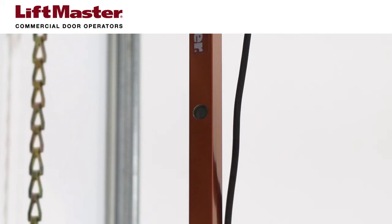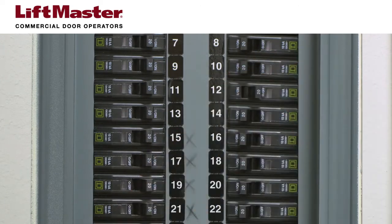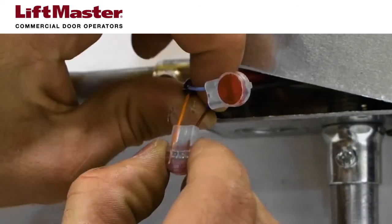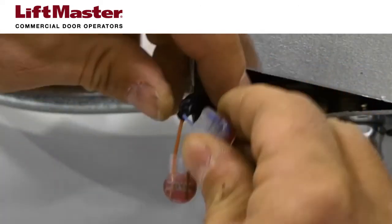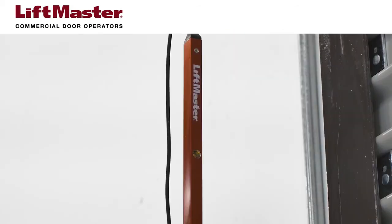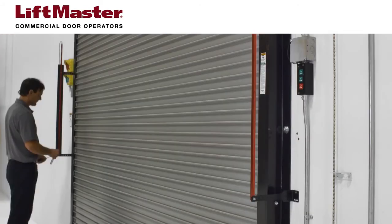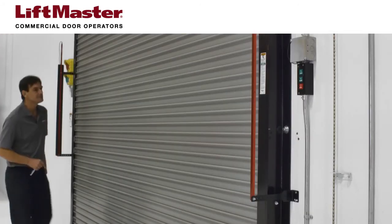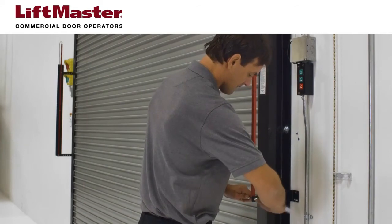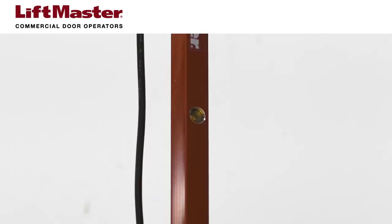If the amber and green LEDs are not on, disconnect power to the operator and check that all wiring connections are secure. If the amber LED is on solid and the green LED blinks, the light curtain is misaligned or obstructed. Make whatever adjustments are needed to align the light curtains so the green and amber LEDs are on and not flashing.